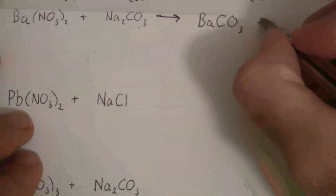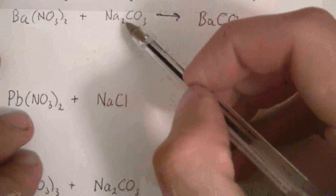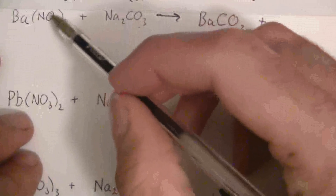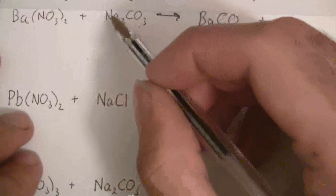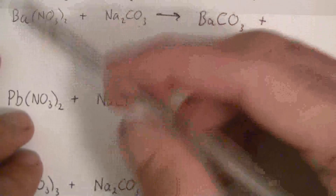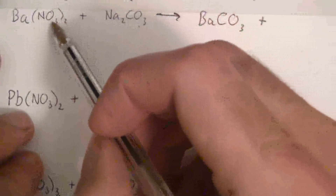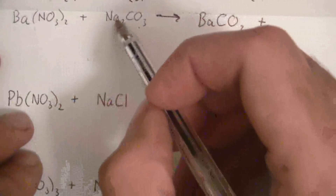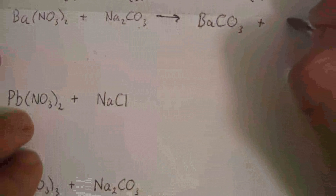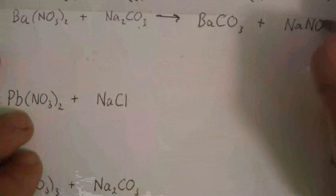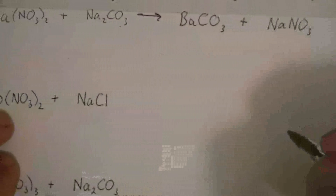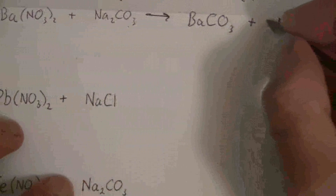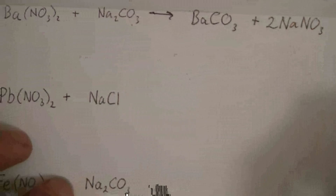That gives us BaCO3, going together one to one. The other product is sodium nitrate: sodium from sodium carbonate combines with nitrate from barium nitrate. Sodium is a positive one charge — it's an alkali metal — and nitrate is a negative one charge, so they go together one to one giving NaNO3. Now we balance: we have 2 Na and 2 NO3, so we put 2NaNO3, and we're balanced.